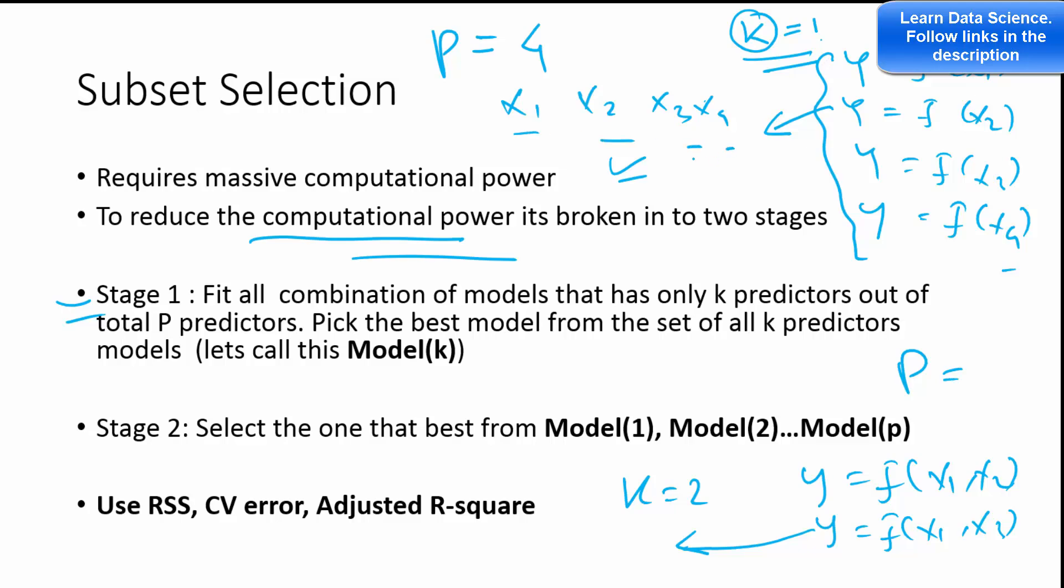When k equals 4, you will have X1, X2, X3, X4, only one model. And that is going to be the model for k equals 4. So for each k, you will have one best model out of these groups.